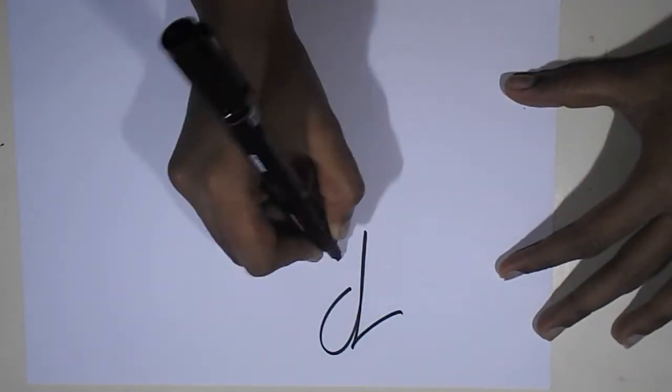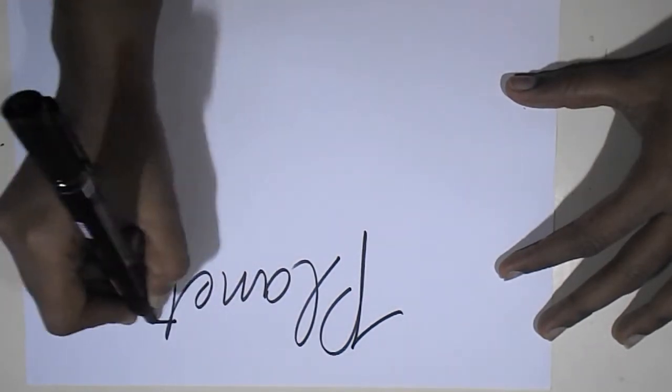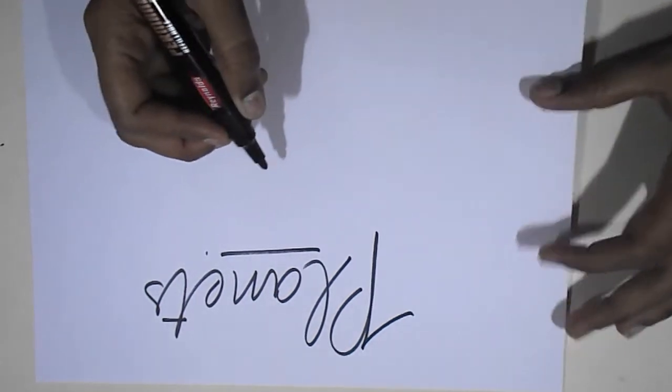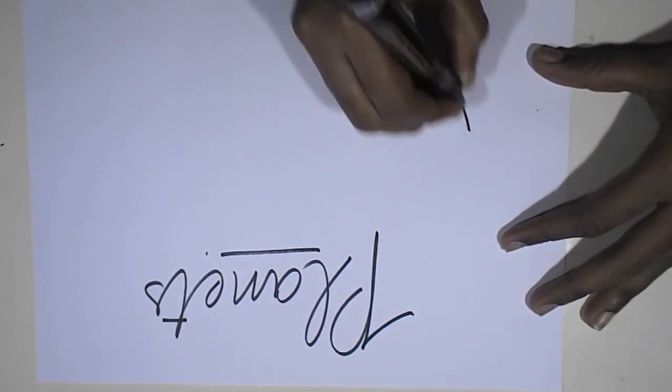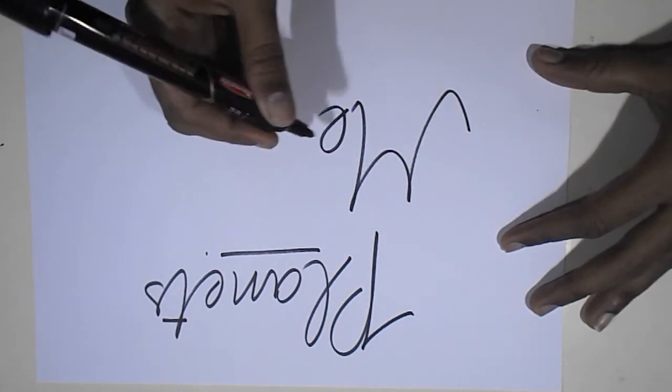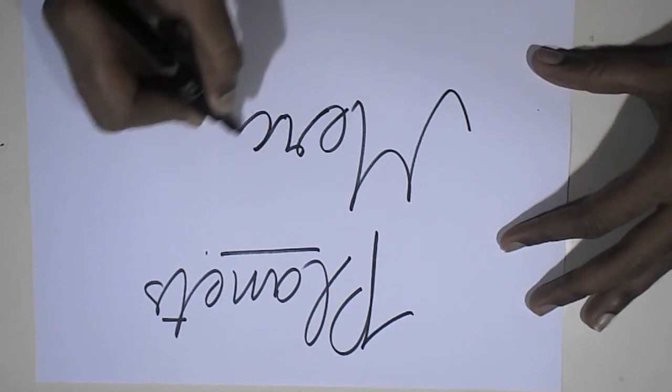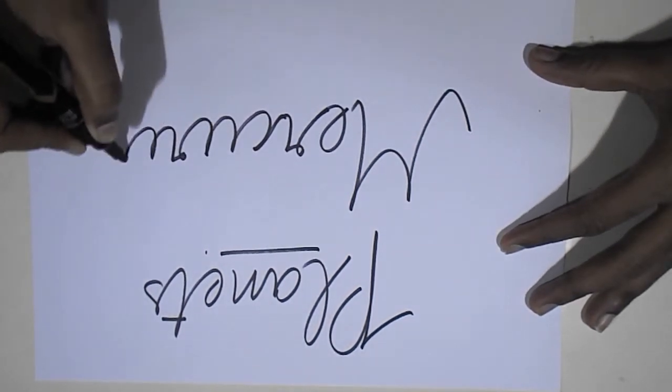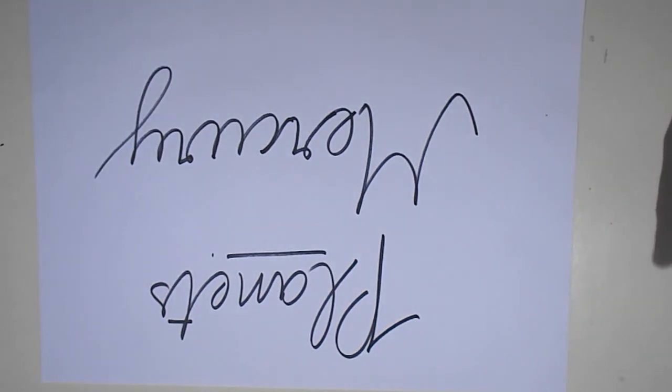Hi kids, today we are going to learn the planets of the solar system. The first one is M-E-R-C-U-R-Y, Mercury. How do you say this? Mercury.